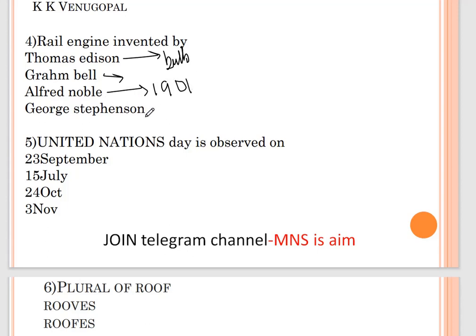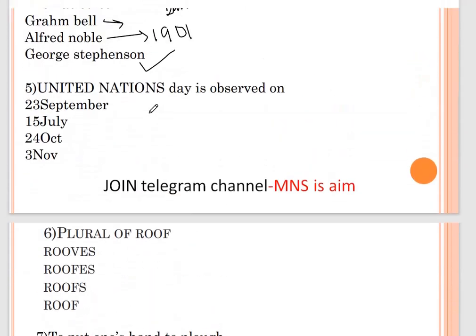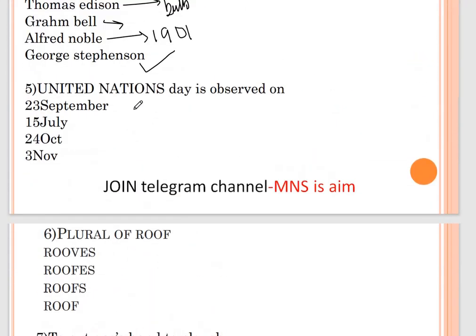Question number five: United Nations Day is observed on — options are 23 September, 15 July, 24 October, and 3 November. The correct option is 24 October. The United Nations was formed on 24 October 1945.